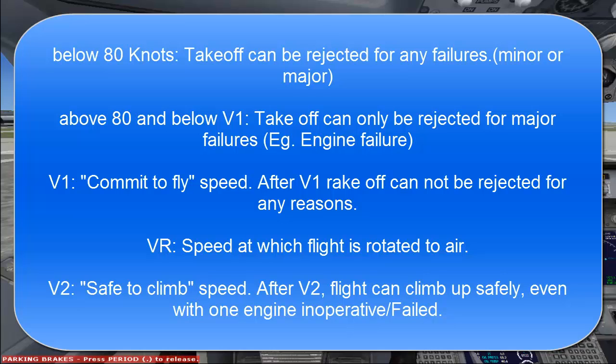At V1 speed, the pilot is committed to takeoff. After crossing V1, the pilot cannot reject the takeoff for any reason, because he won't be able to come to a full stop on the runway without overshooting it. After V1, the pilot is committed to takeoff. V1 is otherwise called the commit-to-fly speed.